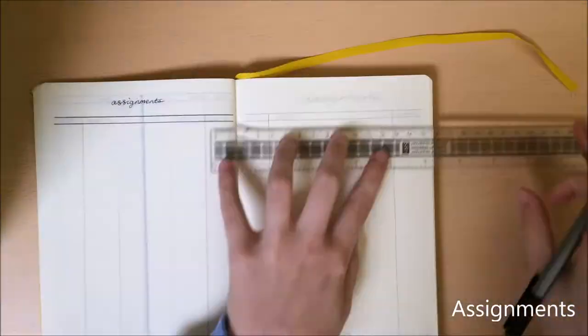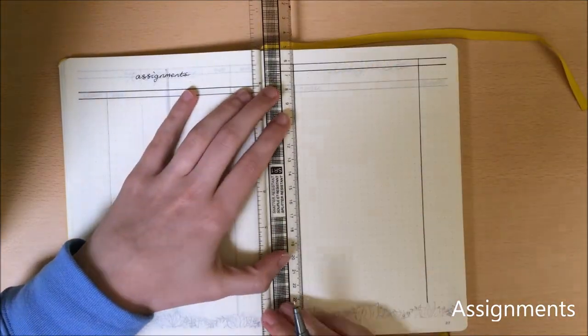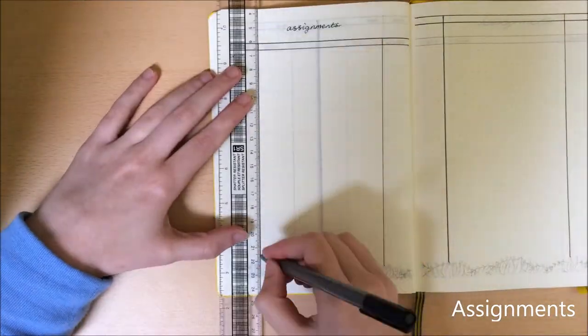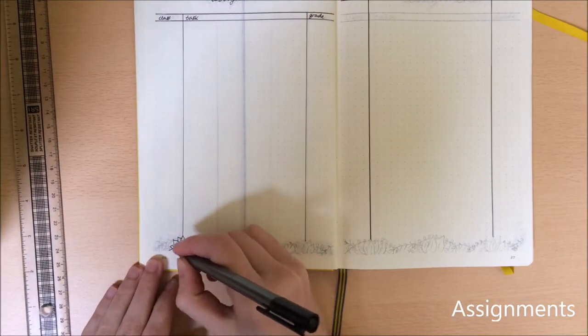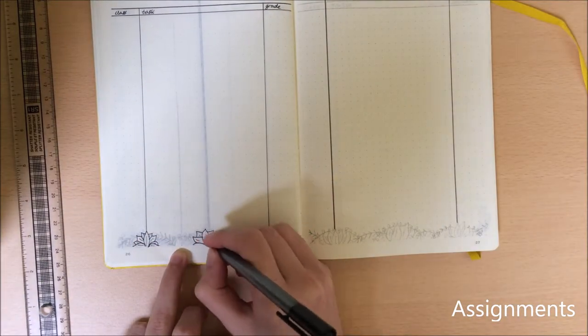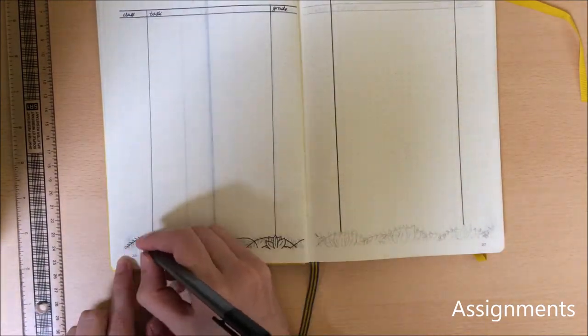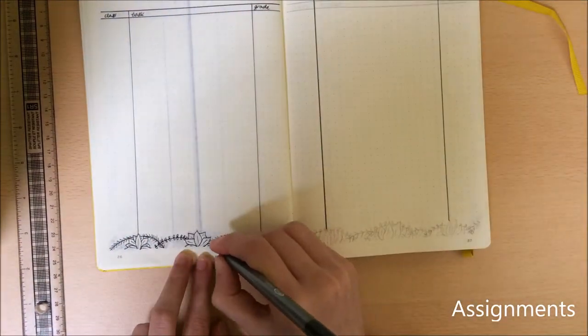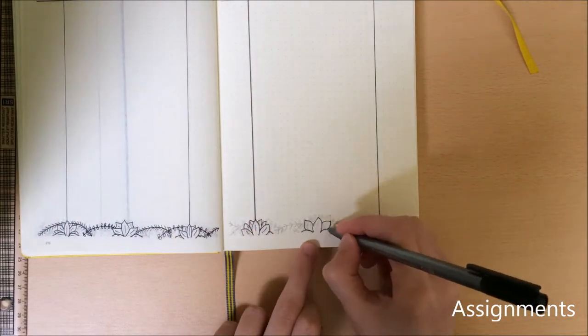Next is my actual assignments page which does take up the full page. I have three columns: one for my class, one for the assignment task I actually have to do, and the third for my grade. As the majority of my assignments do contribute some percentage to my final overall mark, this is a very easy way to just keep track of them all and see where I'm at.